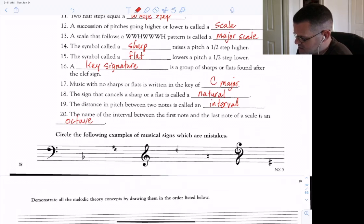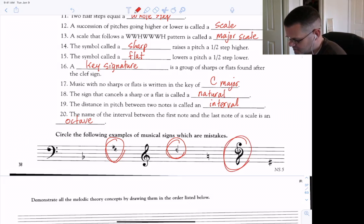And we've got to circle the ones that are the mistakes. That sharp sign is tilted funny, flat sign is backwards, and the treble clef is upside down.